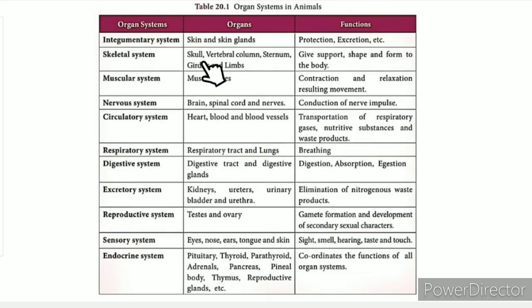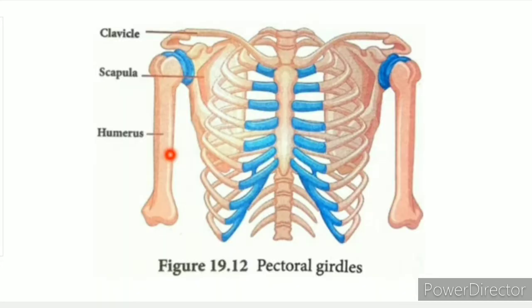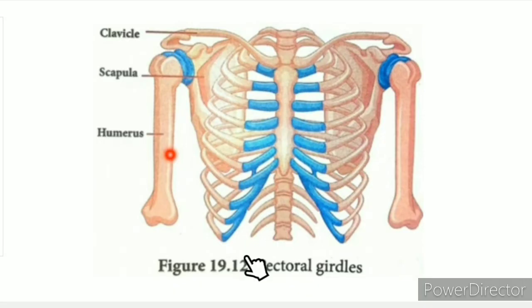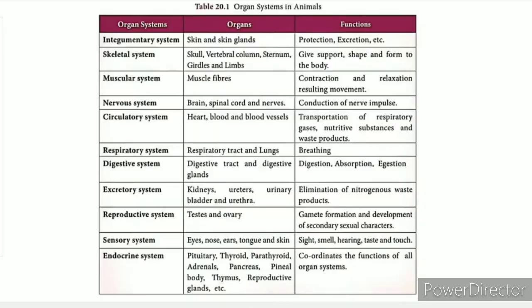The skeletal system includes the skull, vertebral column, sternum, girdles, and limbs. The sternum and girdles are distinct parts; the limbs have joints that allow movement. The functions of the skeletal system include support, shape, and movement.